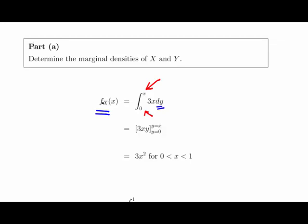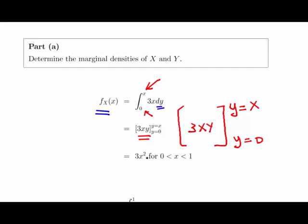It turns out to be a very straightforward definite integral. The integral of 3x dy is 3xy. When we evaluate that at y = x, we get 3x², and when we evaluate it at y = 0, we get 0. So the marginal density of x is 3x² for 0 ≤ x ≤ 1.